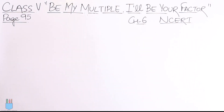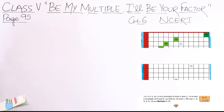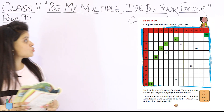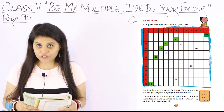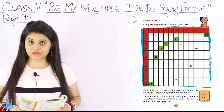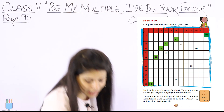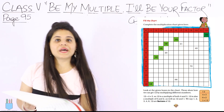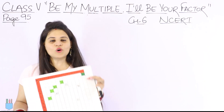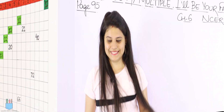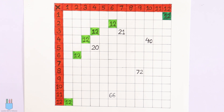So as you know, we are doing chapter number 6 and now we have reached page number 95. So here we have a chart — our topic is to fill the chart. So complete the multiplication chart given here. I have prepared a chart for you; now we have to complete it.